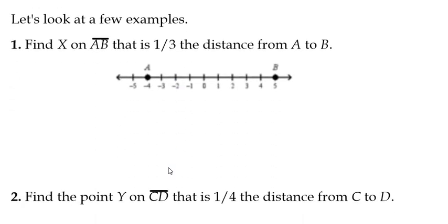First example, we're going to find point X on segment AB. AB is the segment that starts at negative 4, goes to positive 5. Looking for a point on this segment that is one-third of the distance from point A to point B.